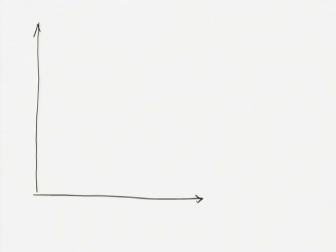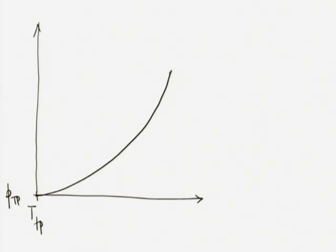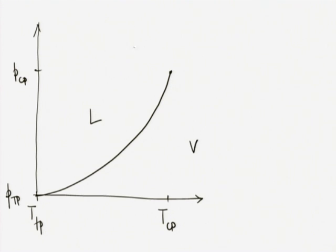I will sketch a part of the state space starting from the triple point pressure as the origin, going up to the critical point. This is the liquid part, this is the vapor part, and this we know is the supercritical part where the distinction between liquid and vapor vanishes.